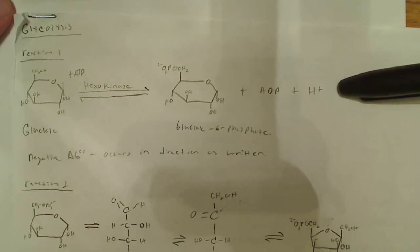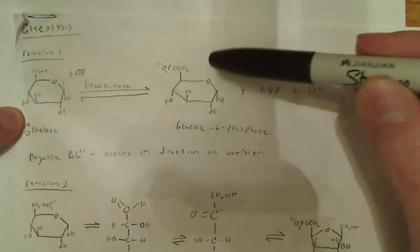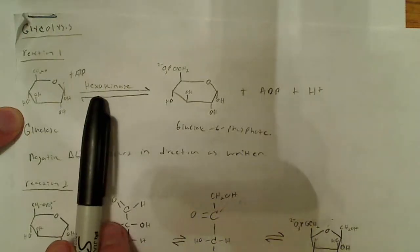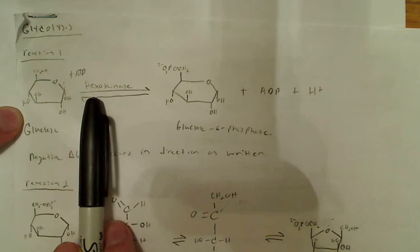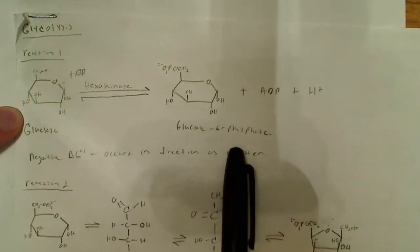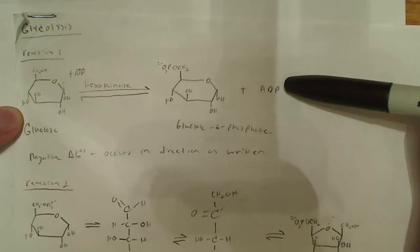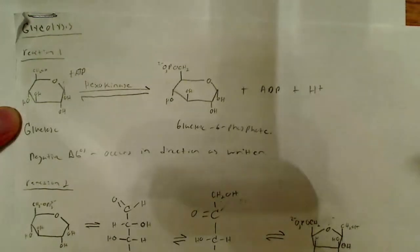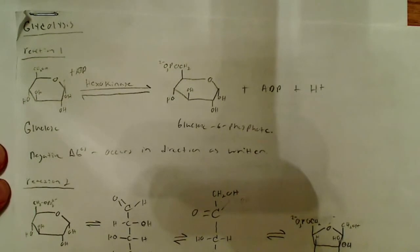The first reaction is the phosphorylation of glucose. A phosphate group is added to glucose using ATP — the hydrolysis of ATP provides energy and a phosphate group. The enzyme is hexokinase, and it produces glucose 6-phosphate. This is one of the regulated steps. It has a negative delta G, so it's a spontaneous reaction that occurs in the direction written because we're using energy from ATP.